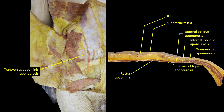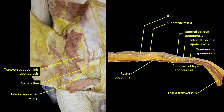It is important to understand that the posterior rectus sheath does not extend from the thoracic cage to the pelvis as does the anterior rectus sheath. Rather, it ends midway between the umbilicus and the pubic symphysis at the arcuate line, where the inferior epigastric artery enters the rectus sheath. The innermost layers — fascia transversalis, extraperitoneal fat, and peritoneum — are present and are likely to require independent suturing after abdominal surgery to prevent wound dehiscence.